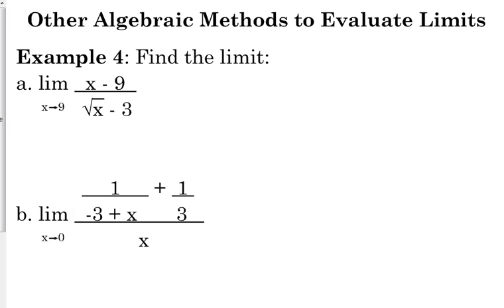Now by inspection, we would try and plug this in. Well, 9 minus 9 is 0, and if we plug it into the denominator, the square root of 9 is 3, 3 minus 3 is 0. So we've got 0 over 0. That's a big problem.